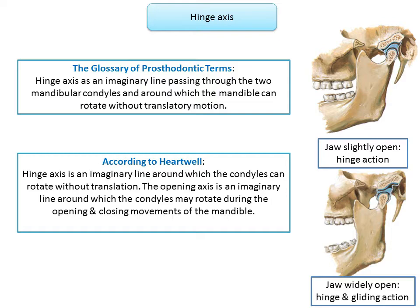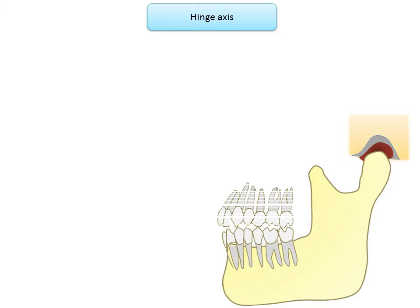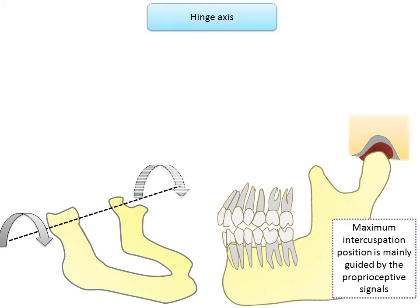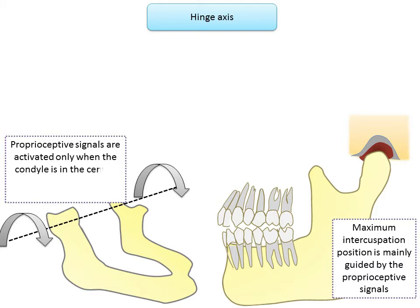What is the biological significance of hinge axis? In the fully dentulous condition, maximum intercuspation is guided by proprioceptive signals present in the periodontal ligament of the teeth. These signals guide the mandible during closing movement. In a fully edentulous condition, these proprioceptive signals are absent and the guidance mechanism is lost. These signals are activated only when the condyle is in the centric relation or hinge position, so for an edentulous mandible we need to activate the condyle in the hinge position.